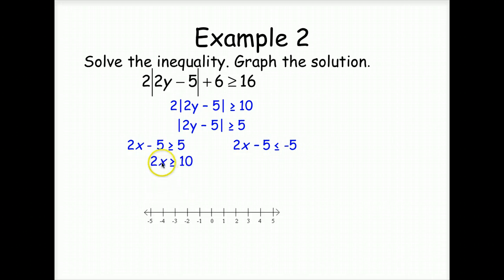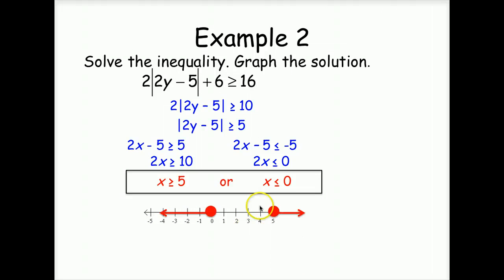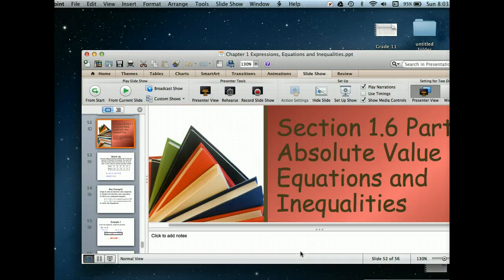So we're going to subtract or add five to both sides and divide both sides by two. We're going to add five to both sides, divide both sides by two. Notice greater than five and less than or equal to zero. So we're going in opposite directions here. Both of them are equal to, so we have a closed-in circle. Very good.